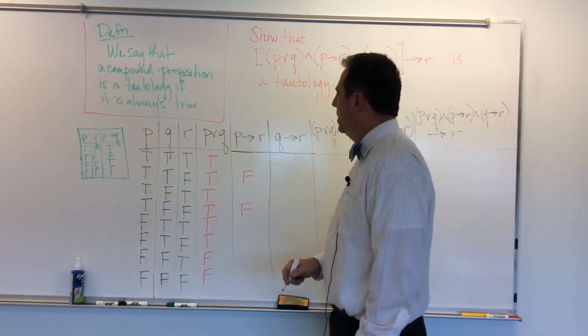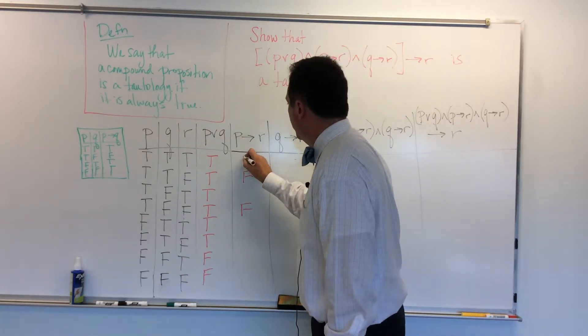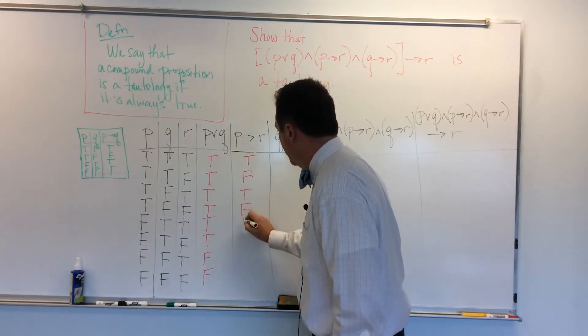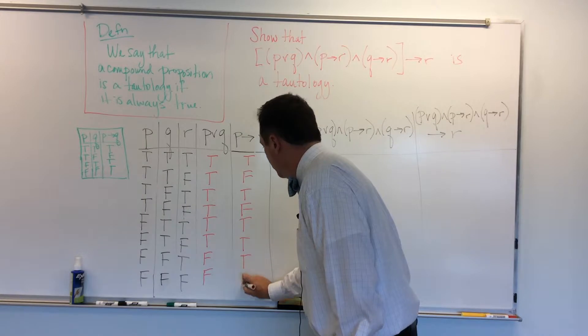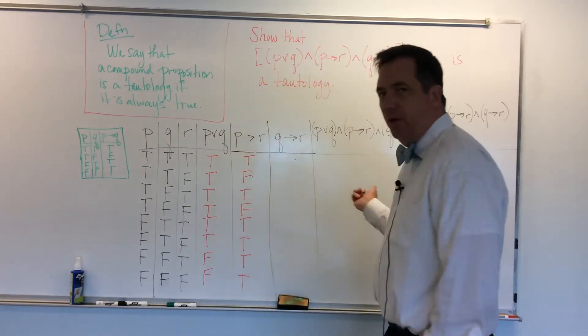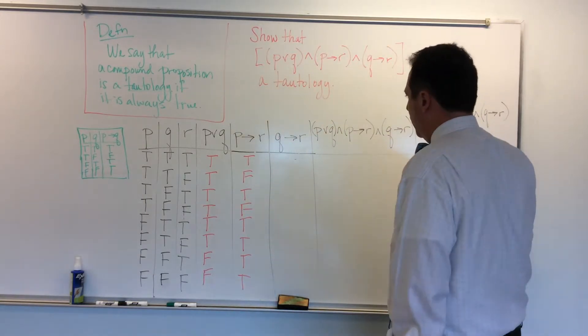True implies false down here is false. And then I'm okay everywhere else. So I only have two cases where I have false. The rest are going to be true. And I'm going to try my best to make these rows sort of straight so that we don't get confused down here. It's easy to get confused when you have so many rows.